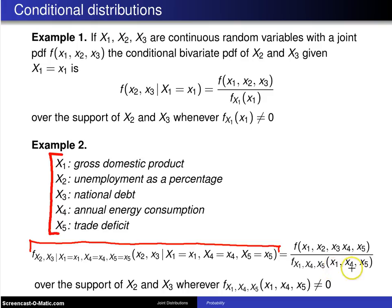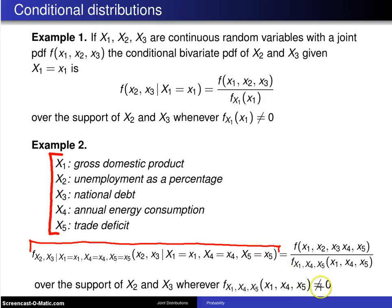In the denominator, you will have the joint distribution of the given random variables, namely x1, x4, and x5. This will be valid over the support of x2 and x3, and you also have to assume that you are not dividing by zero.